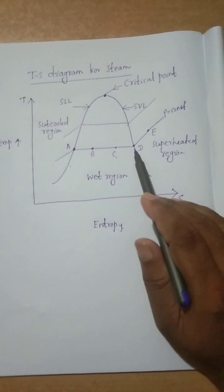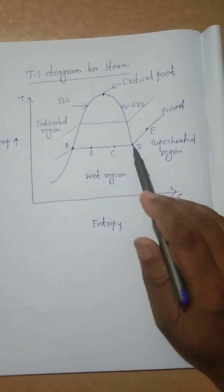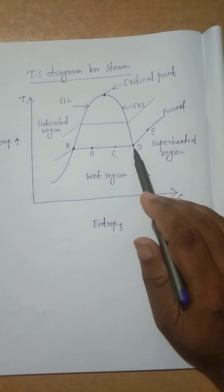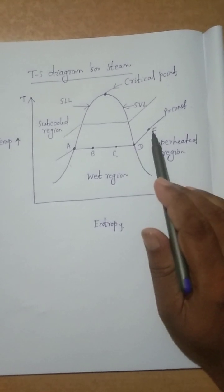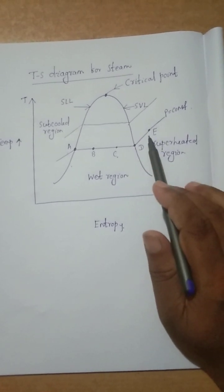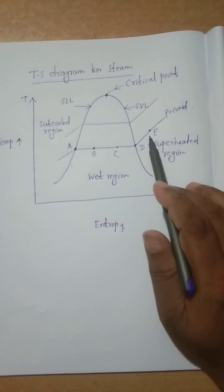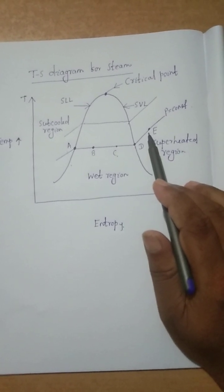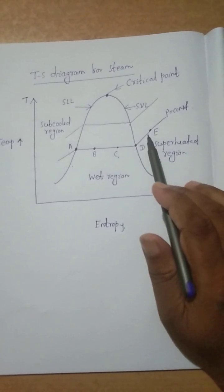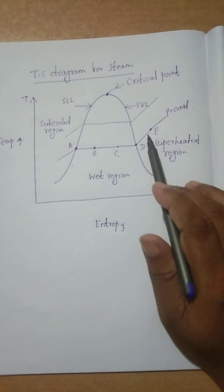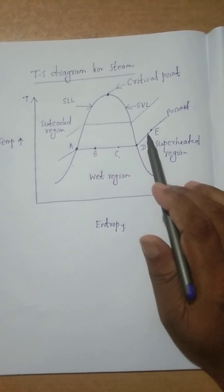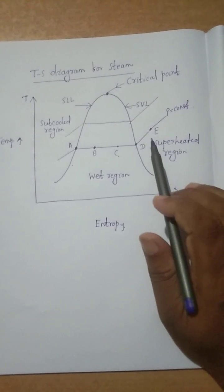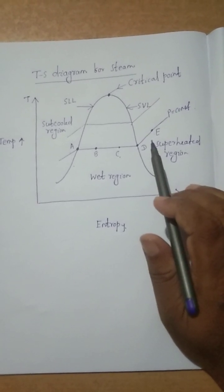If we again heat the dry saturated steam, it is called superheated steam. On the diagram, points B and C represent wet steam, point D is dry saturated steam, and point E is superheated steam. The steam that obeys all the gas laws is called superheated steam.